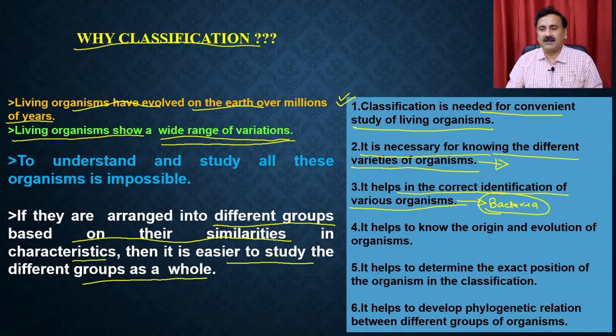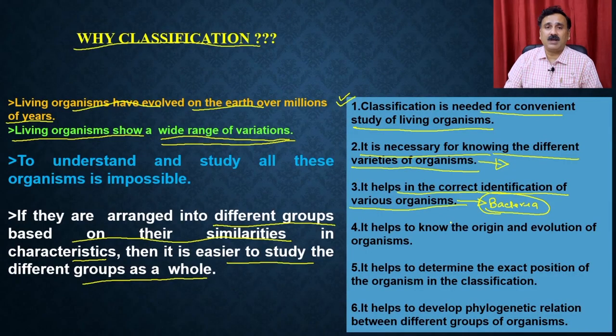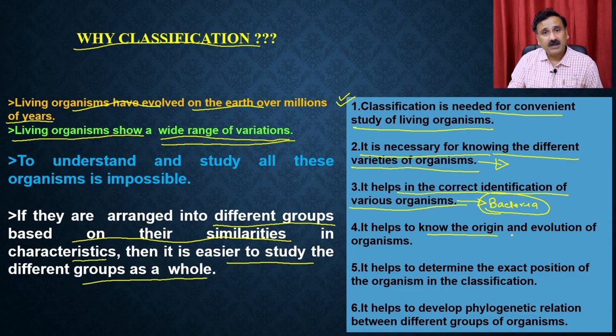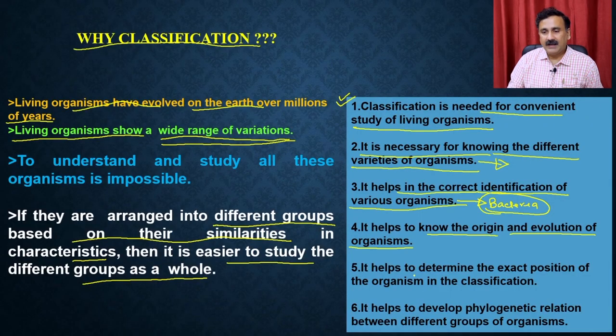Once an organism is placed into a particular group, for example bacteria, you can know many basic properties without even doing experiments — such as physiology, cell makeup, whether it is unicellular or multicellular, whether it has mitochondria, and so on. If it is a eukaryotic organism, you know it will have eukaryotic cell structures. If it belongs to plants, you know it will have a cell wall. Classification also helps to know the origin of that organism and how it evolved from earlier known organisms, and ultimately helps to develop phylogenetic relationships between different groups.